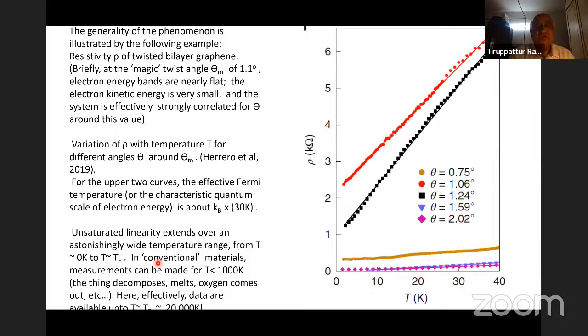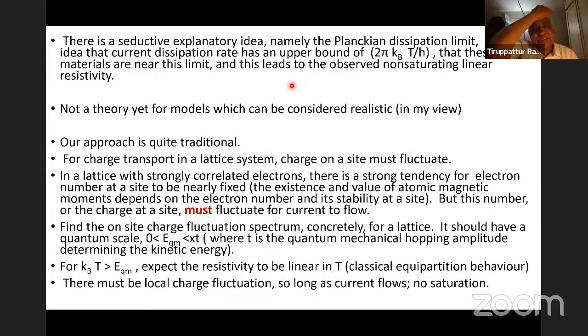Jarillo-Herrero and so on, who did this experiment, who discovered this twisted bilayer graphene and many phenomena in this twisted bilayer graphene, they measured resistivity of twisted bilayer graphene. Here is shown on the y-axis as a function of temperature for different values of twist angles. They found that if the twist angles are close to the magic angle of 1.1 degrees, the resistivity is linear to, well, let us say 40 degrees Kelvin. Now, the 40 degrees Kelvin may not appear to be enormous. But you see, the Fermi temperature of these things is of the order of 40 degrees Kelvin also. One could put it this way, that the unsaturated linearity in these systems of resistivity extends over an astonishingly wide temperature range from about 0 Kelvin to a temperature of the order of the Fermi temperature. In conventional materials, it is simply not possible to explore any behavior over this regime. Because you can make measurements maybe till about a few hundred degrees Kelvin, because then the thing starts decomposing or it melts or oxygen starts coming out of it.